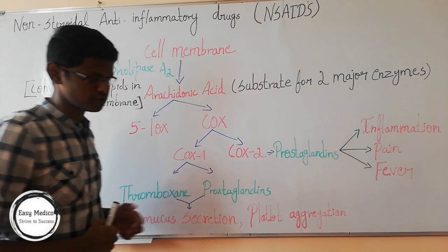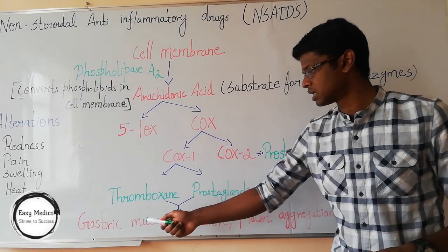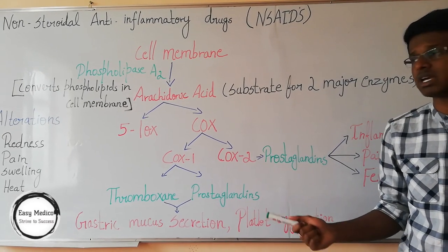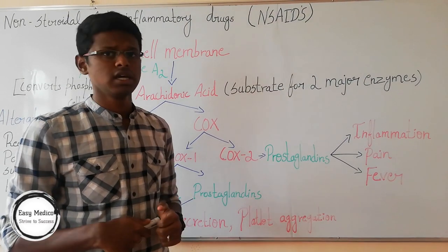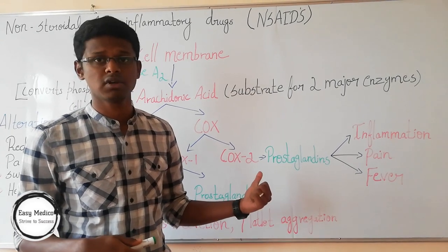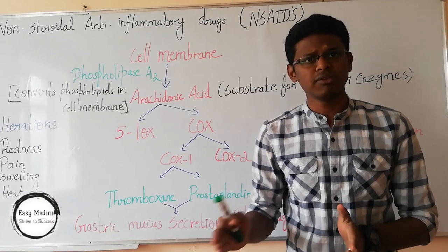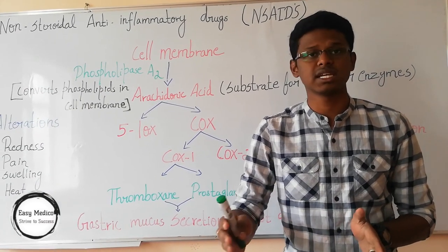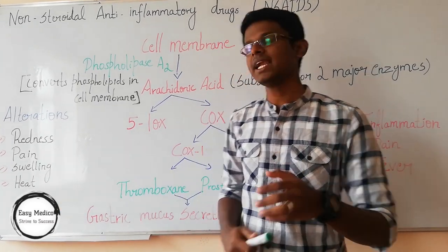Now, what are the main functions of thromboxane and prostaglandins, which are the products of cyclooxygenase I? These help in gastric mucus secretion, platelet aggregation, and renal blood flow increase. The prostaglandins produced during inflammation cause inflammation, pain, and fever. The signs a patient can feel during inflammation are redness, pain, swelling, and fever.